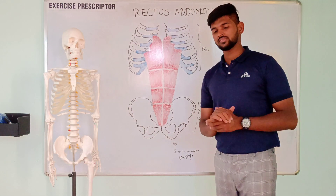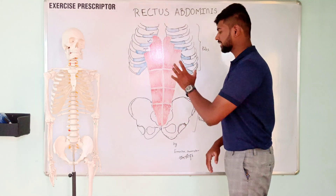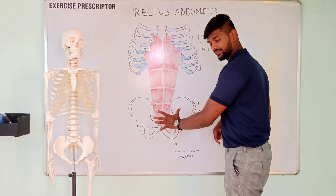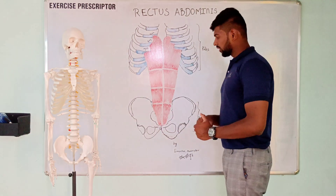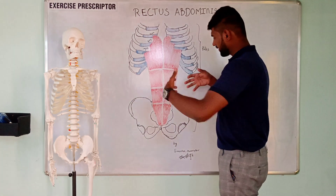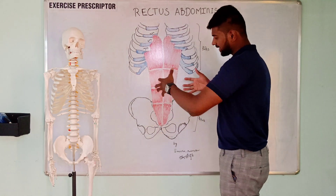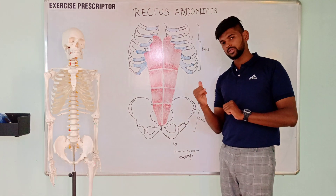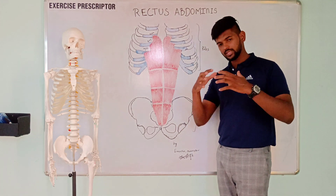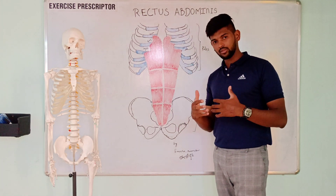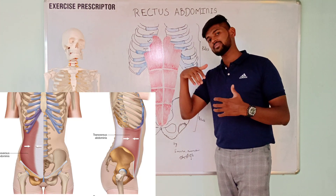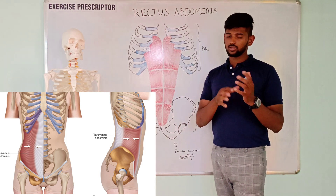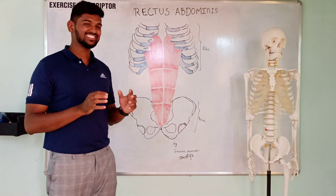The isometric stabilization function of the rectus abdominis stabilizes the lumbar spinal joint and the pelvis. It also stabilizes the core of the entire body, though this is not its primary action — core stabilization is done mostly by the transverse abdominis, which we will see in a separate video.